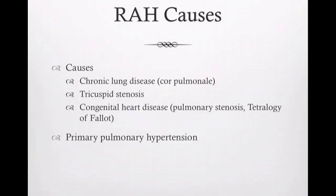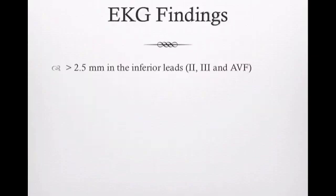Causes include COPD or lung disease, tricuspid stenosis - where the valve separating your right atrium and right ventricle becomes stenotic or narrowed, forcing the right atrium to pump at higher pressure, making that muscle hypertrophic. Congenital heart diseases like pulmonary stenosis and tetralogy of Fallot also apply. We're also thinking about primary pulmonary hypertension, but for testing purposes, we're really thinking COPD as the classic cause of right atrial hypertrophy.